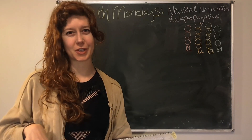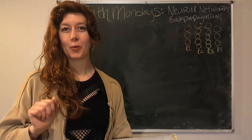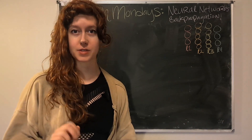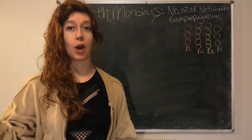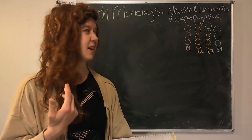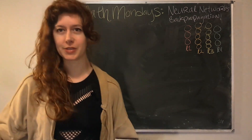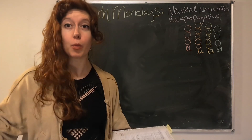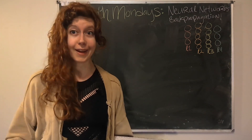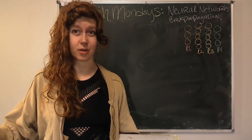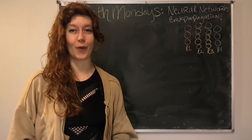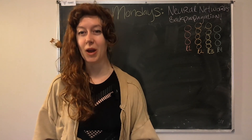Hello, lovely humans. Jen Foxbot here. All right, we return to look at backpropagation for neural networks. Basically, how do we minimize the cost function for a neural network? In other words, if we get a hypothesis function that allows us to make predictions using a training set, how do we know how accurate our hypothesis function is, and how do we make it better with backpropagation? Okay, so strap on in. This is going to be a wild ride.